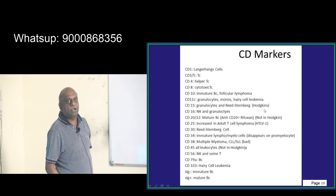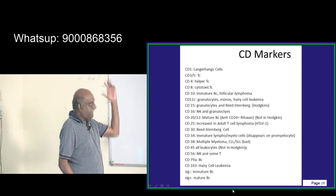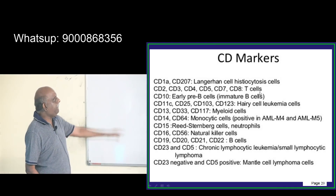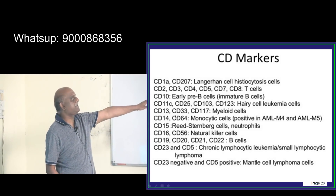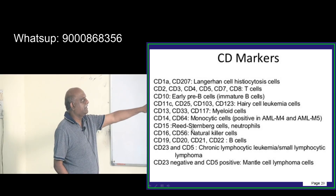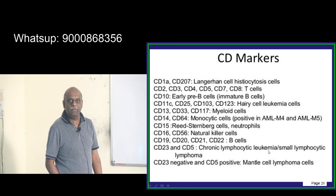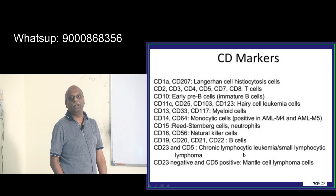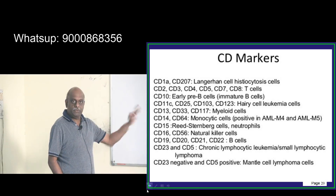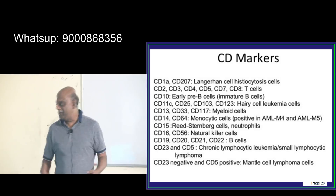CD15 is granulocytes and Reed-Sternberg cells of Hodgkin's lymphoma. CD16 is natural killer cells and granulocytes. Early pre-B cells (immature) are CD10. Myeloid cells are CD13, CD33, and CD117. CD16 and CD56 are NK cells. CD23 and CD5 together are very specific for chronic lymphocytic leukemia or small lymphocytic lymphoma. All your luck of becoming something unfortunately depends on the CD count.